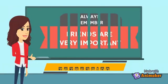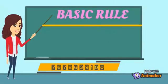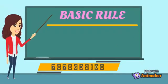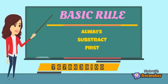Please remember these friends as they are very important to solve the questions. What is the basic rule for tens complement? As you already know, for five complement the basic rule was always add first. In tens complement, the basic rule is always subtract first.